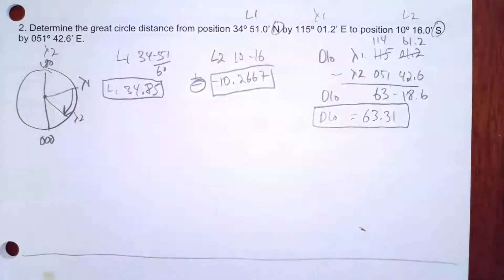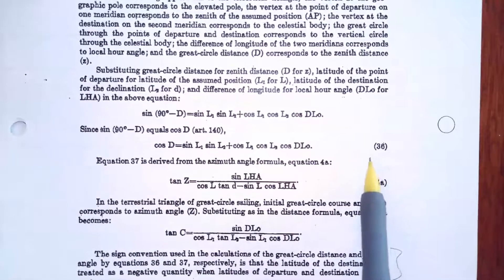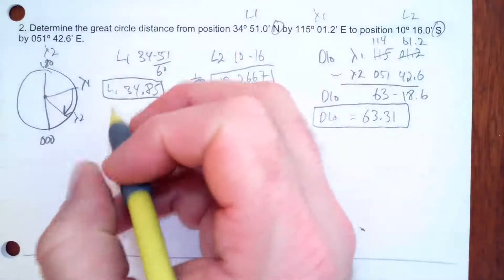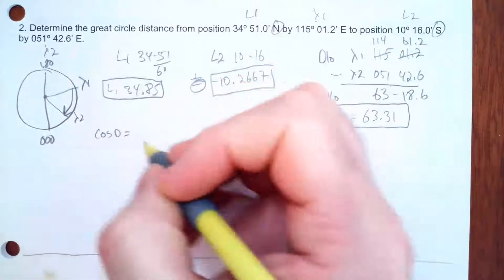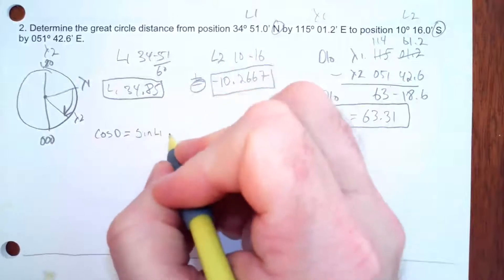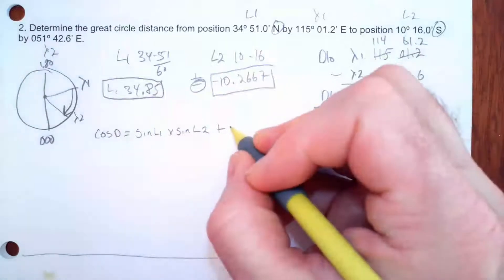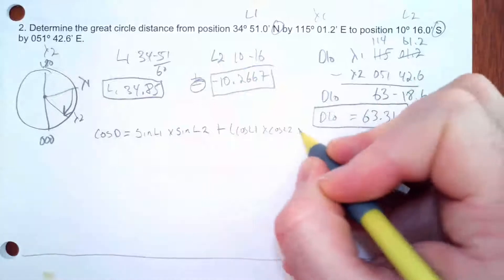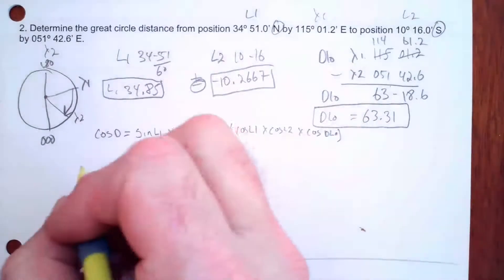Now I'll go back to Bowditch and transpose Formula 36 as I'm going to use it: cosine D = (sine L1 × sine L2) + (cosine L1 × cosine L2 × cosine D Low). You've got to use your parentheses correctly here.